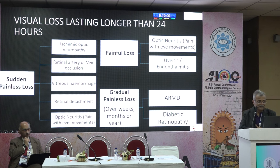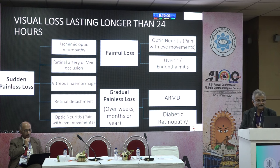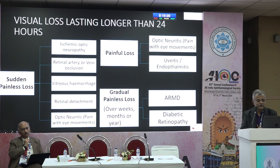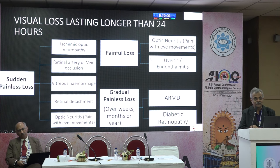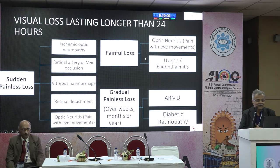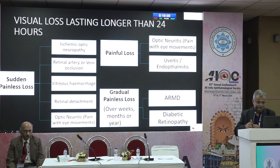Other causes include vitreous hemorrhage due to any cause; retinal detachment may not be so sudden but the patient may realize it suddenly. Optic neuritis is another common cause, where there would usually be painful eye movements. Painful vision loss could be optic neuritis, or most importantly, acute endophthalmitis — especially when a patient has just had cataract surgery and suddenly complains of pain and loss of vision. Sometimes it could also be non-infectious uveitis.